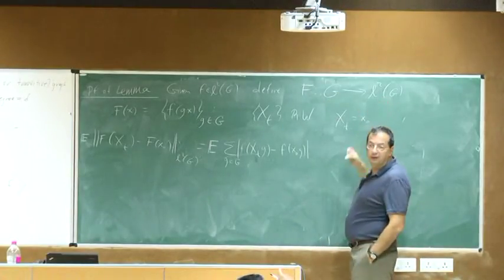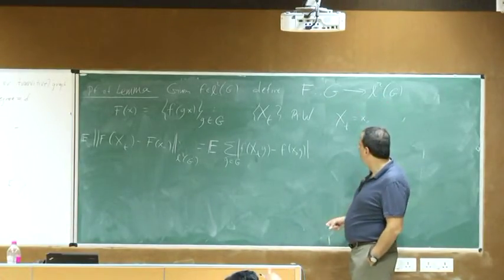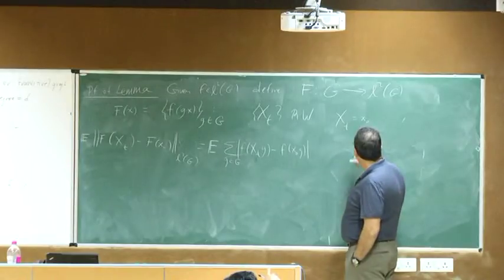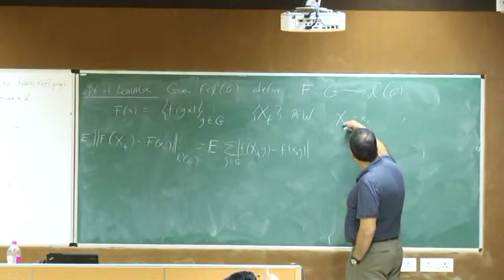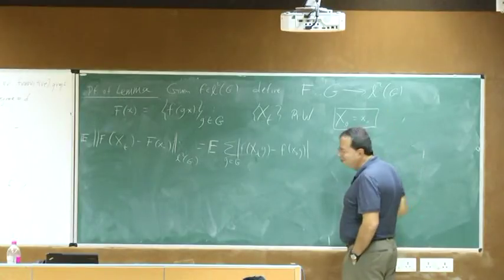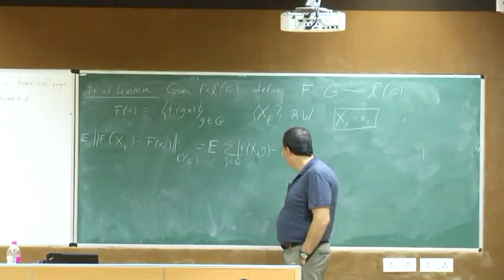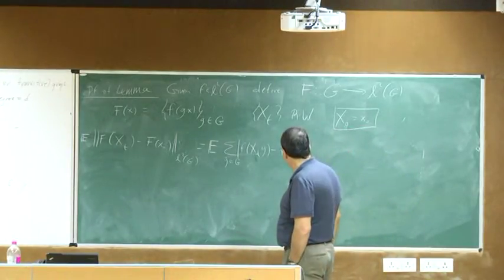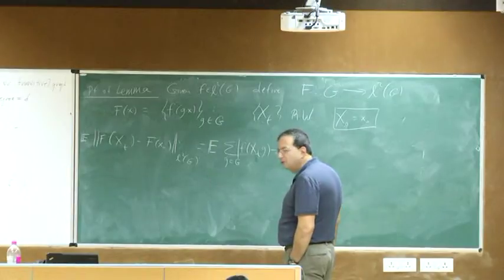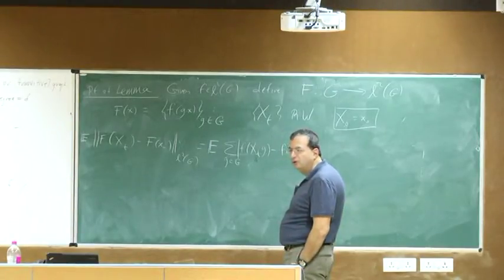So this is the expectation of the sum. Let's write explicitly what this norm is. We have to sum over G: little f of X_T G minus little f of X_0, G. Capital F of little x is this mapping, defined for any choice of little x. Capital F is a map from G to L2 of G.